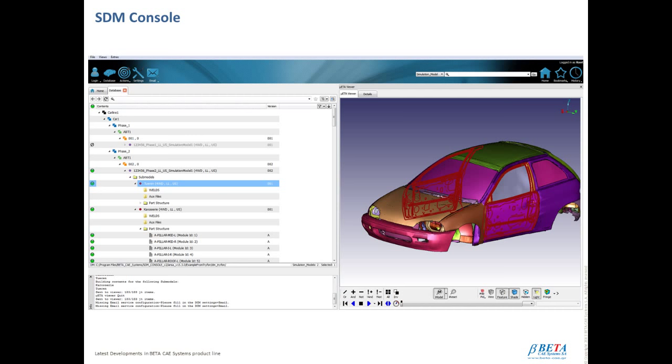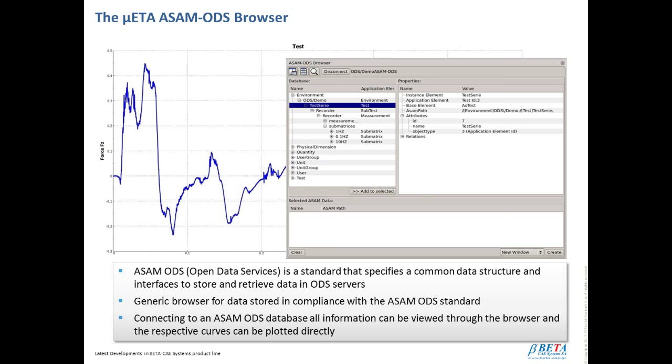Furthermore, today we introduce a new program, the SDM console, that offers a direct interface to the data management system and an enhanced GUI for data browsing and for the creation and editing of the CAE structure. Through the SDM console GUI, several processes can be initiated with the aid of Python scripting. Last but not least, the ASAM ODS Open Data Services is a standard that specifies the common data structure and interfaces to store and retrieve data in ODS servers. So, Beta CAE systems have developed an ASAM ODS browser embedded in META, the post-processor of Beta CAE systems, and included in the standard package at no extra cost. META ASAM ODS browser provides a simple and intuitive user interface for browsing data stored in compliance with the ASAM ODS standard. By simply connecting to an ASAM ODS database, META can display and then upload the data.